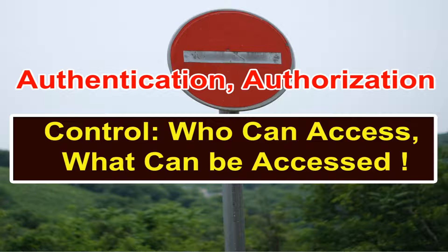Authorization can be role-based — for example, even if a user is authenticated, it's important to know which operations are available for that authenticated user. With different roles you can have another layer of access control on the data you are exposing. Using different scope mechanisms you can ensure that even if a user has been authenticated, that user should be able to utilize operations or access data only based on the roles that user has.